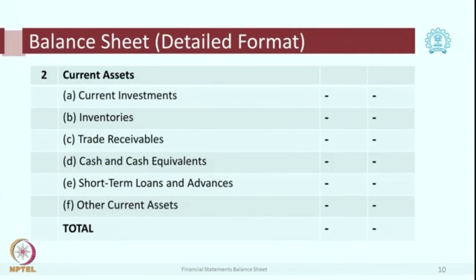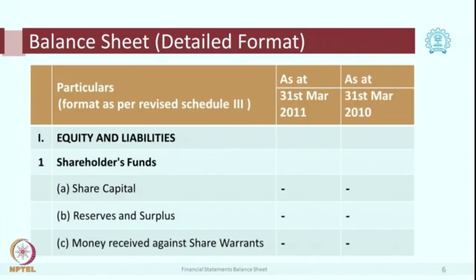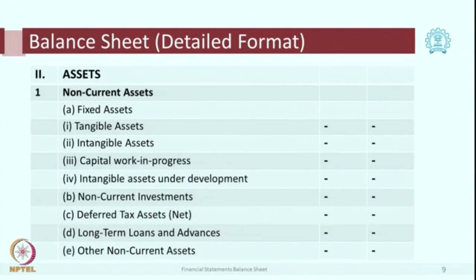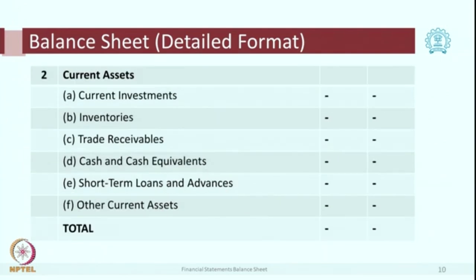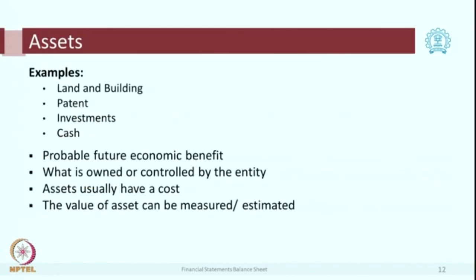If we look at the format, it is organized as per permanence. What is most permanent comes first. For example, in the balance sheet, share capital has the longest tenure and comes first, then non-current liabilities, then current liabilities. In assets, first we have non-current assets because they will be with us for more than one year. Within that, fixed assets are with the company for a longer tenure, so fixed assets come first, then other non-current assets, then current assets. The balance sheet has 3 main elements: assets, external liabilities, and owners' funds.